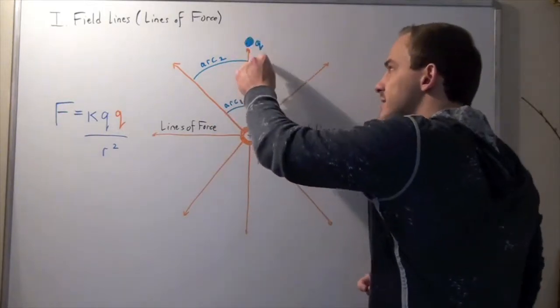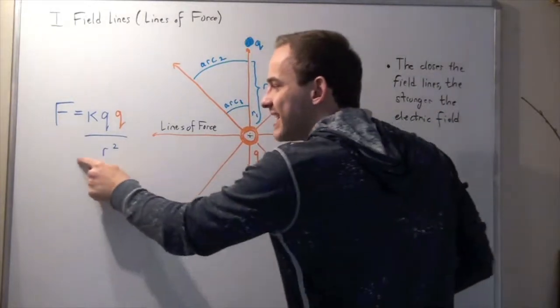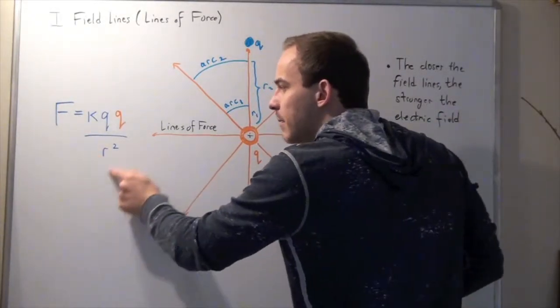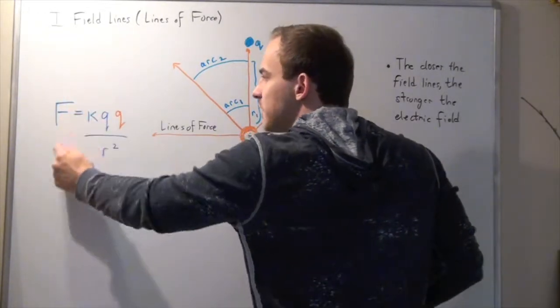Well, if we decrease the distance between this charge and this charge, this gets smaller, making our denominator smaller, so this approaches zero, so this gets very, very large.